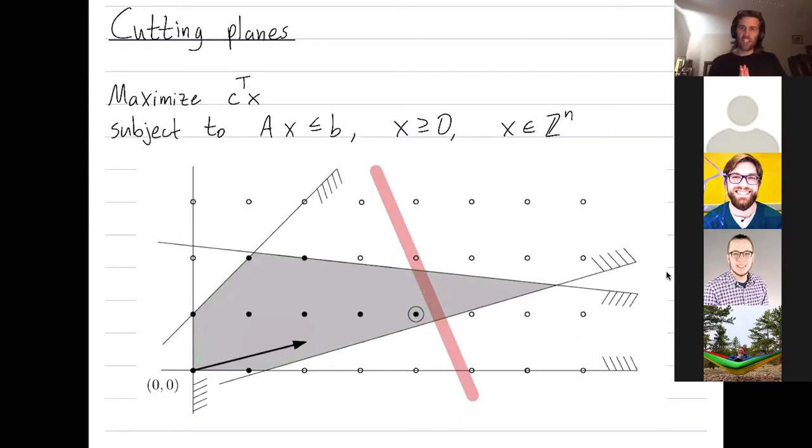Questions so far? There are many different types of cutting plane algorithms. Today, I just want to describe the Gomory cut, which is one way to find such a new red constraint.